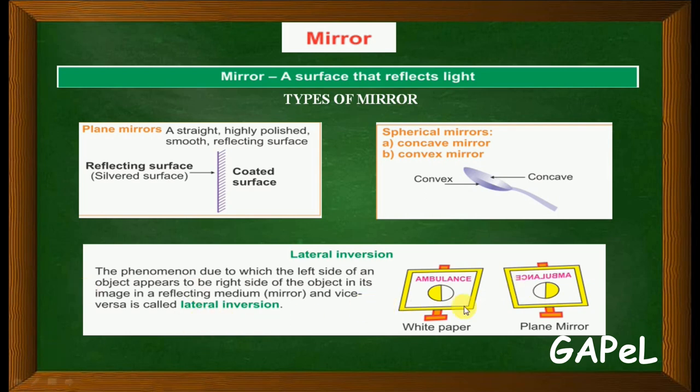So now since you have understood the example, we will see the definition. The phenomenon due to which the left side of an object appears to be the right side of the object in its image in a reflecting medium or mirror, and vice versa. That is the meaning of lateral inversion.